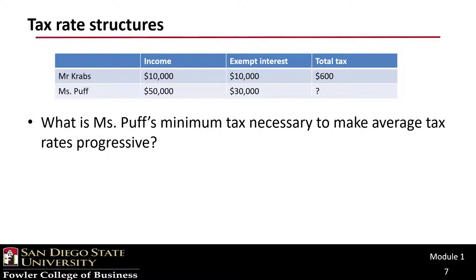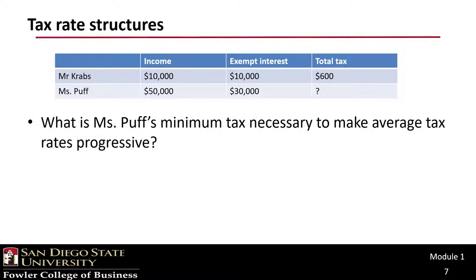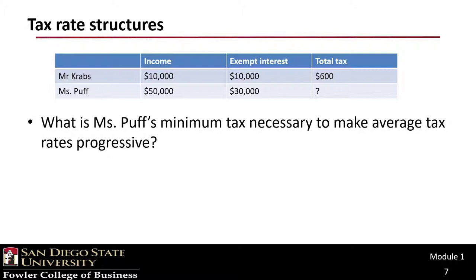I would start by determining what is Mr. Krabs' rate of tax. Since tax-exempt income is not taxable, Mr. Krabs' tax rate must be $600 over $10,000, or 6%. If we apply that as a proportionate rate to Mrs. Puff, $50,000 times 6% would be $3,000. So at $3,000, the tax rate structure is proportionate. Thus at $3,001, it becomes progressive — albeit only slightly, but that would be the minimum amount, which is what we are looking for.